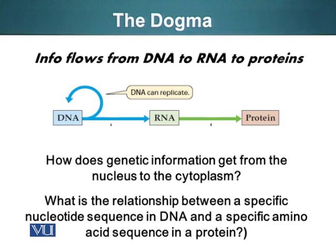That information is used to make a molecule of RNA, which contains the same information that DNA contained originally. This RNA can be used to form protein. Once the information has been passed on to proteins, you cannot retrieve that information. DNA can also replicate itself because we need continuity of that information for the next generations.